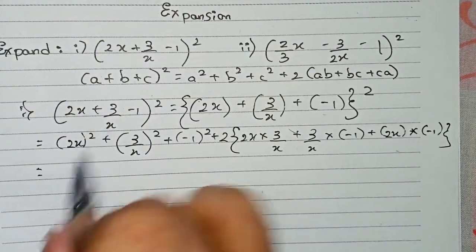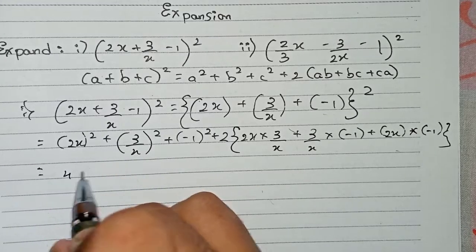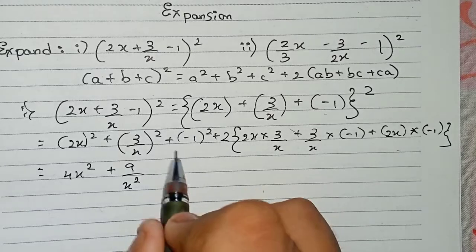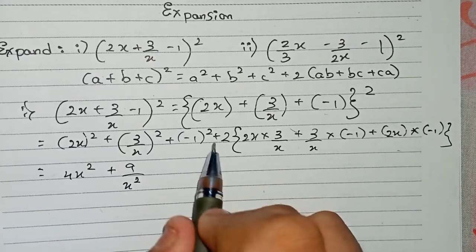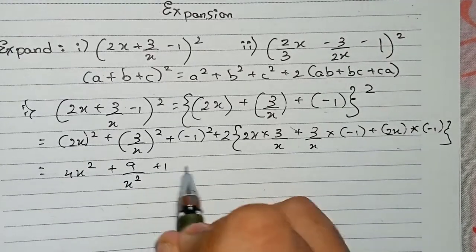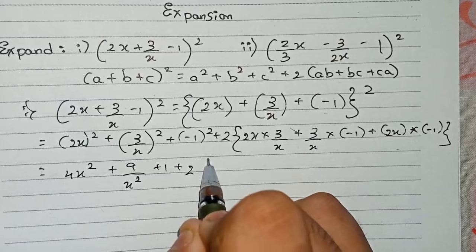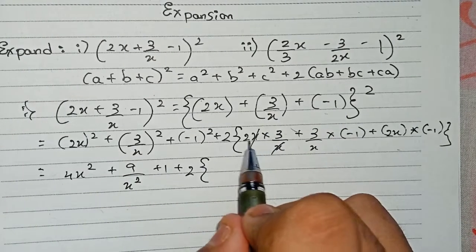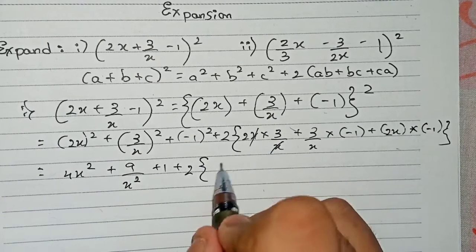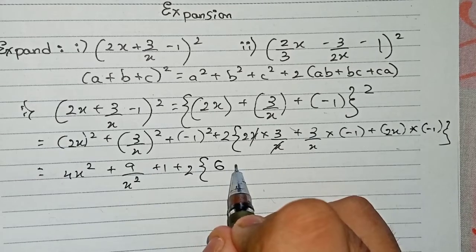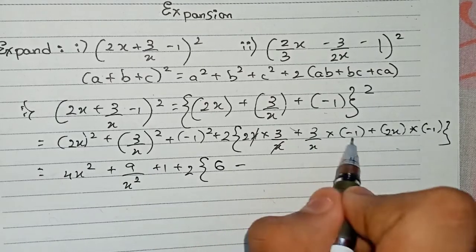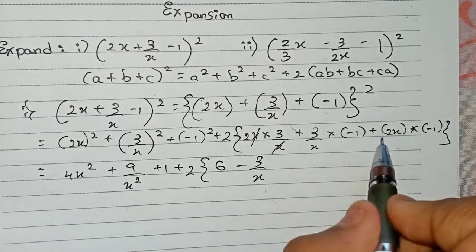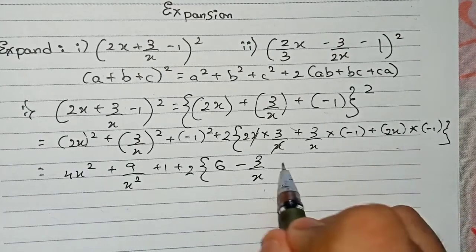Squaring the terms: 2² gives 4x², (3/x)² gives 9/x², and (-1)² gives +1. For 2 × 2x × 3/x, the x's cancel so we get 2 × 3 = 6. Then minus 3/x, and also minus 2x.